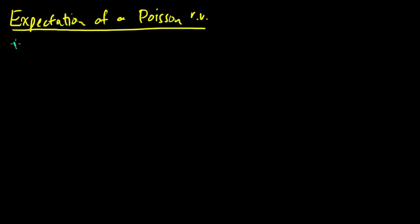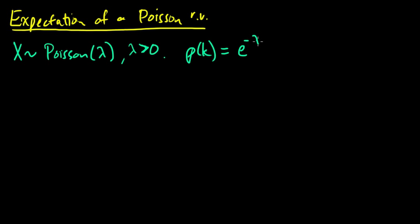So, a Poisson random variable, we say that X is Poisson with parameter lambda, and here lambda is a strictly positive real number. So X is Poisson if its PMF, probability that X equals k, equals e to the minus lambda times lambda to the k divided by k factorial.